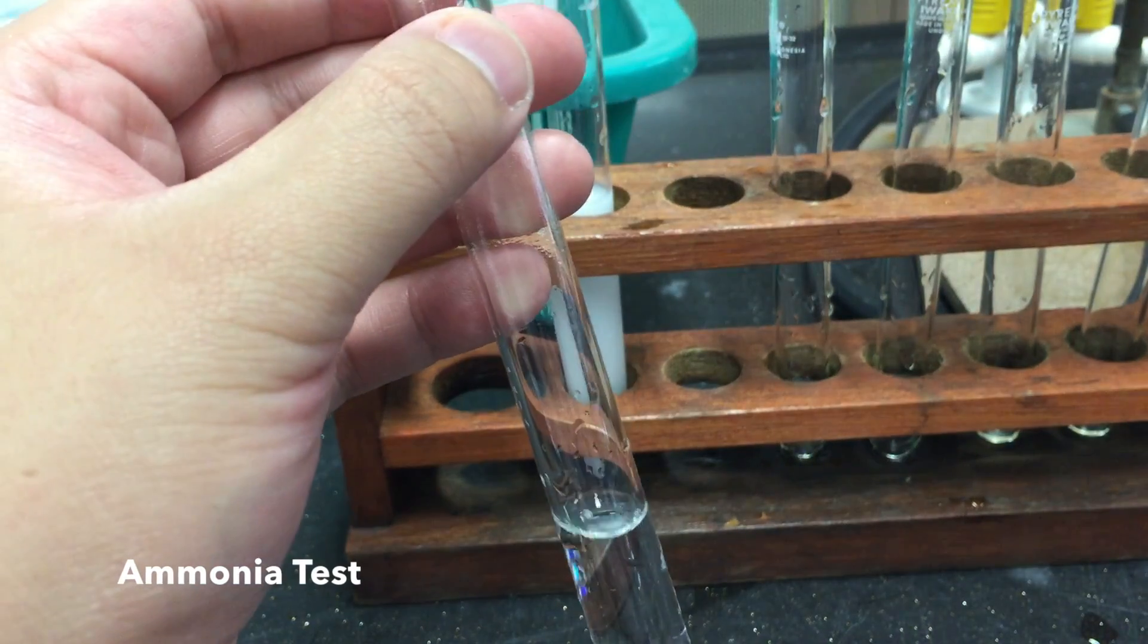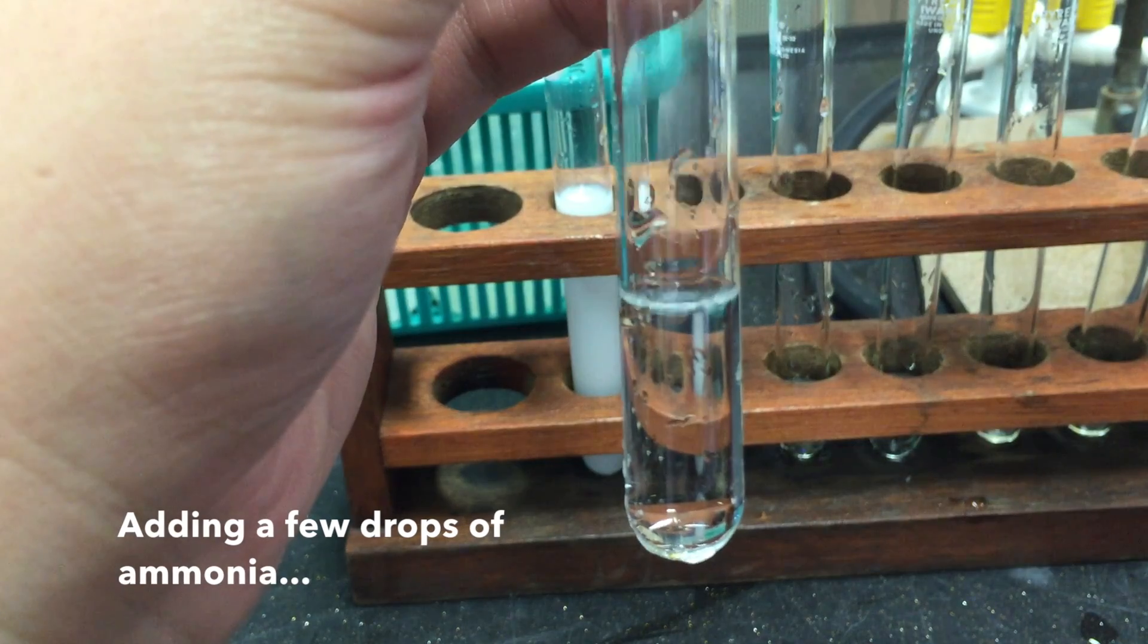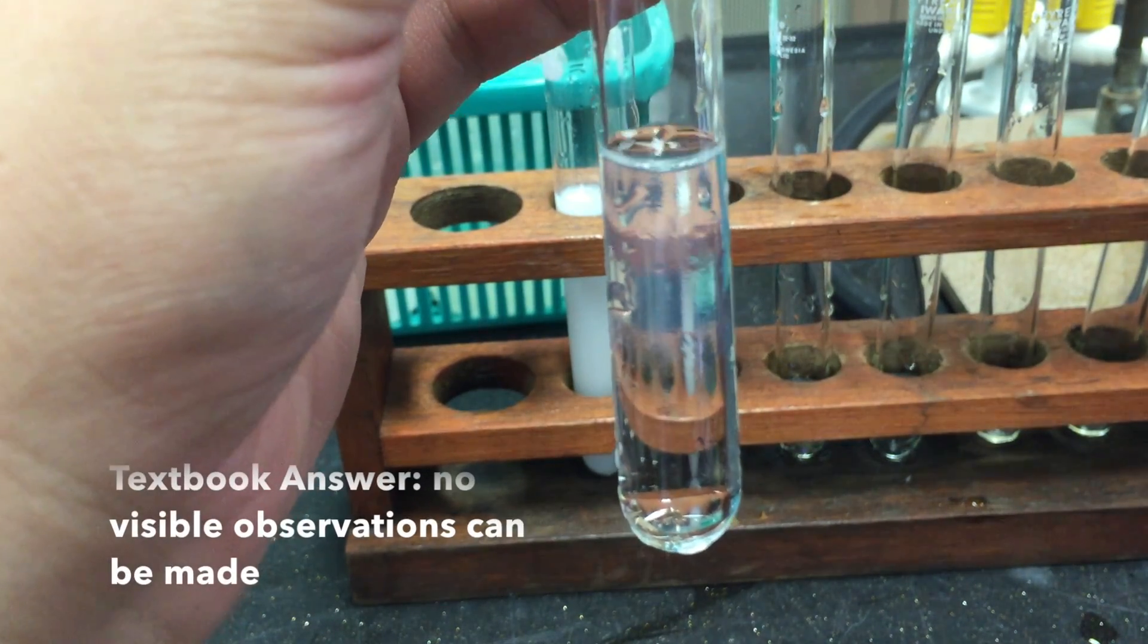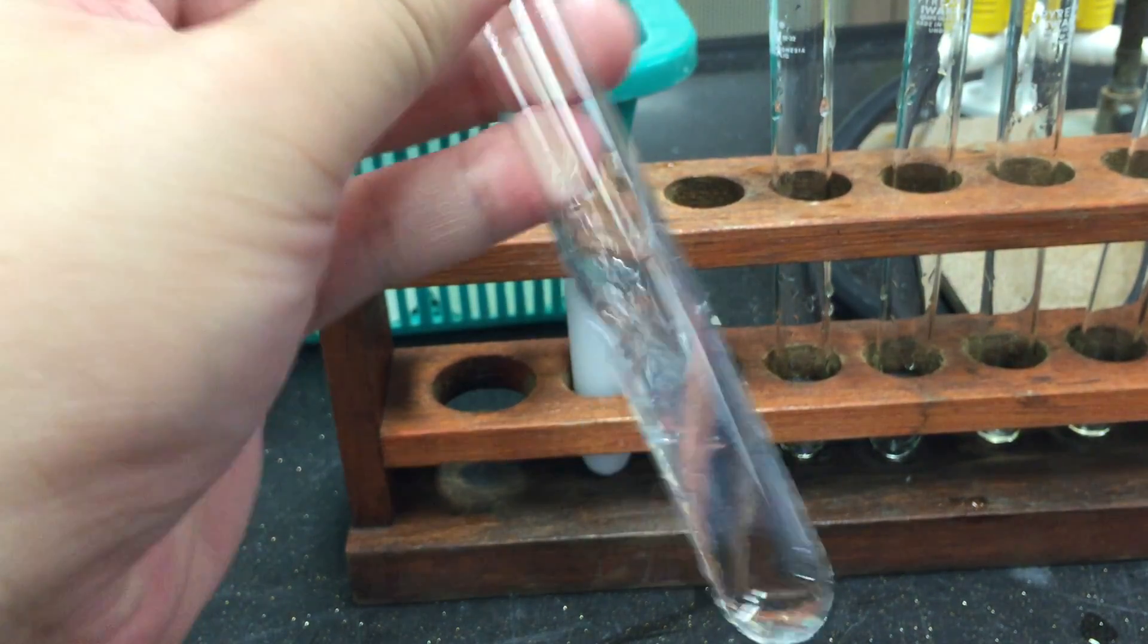Next up is the ammonia test. To a small sample of your solution, add a few drops of ammonia. According to the textbook, no visible observations can be made.